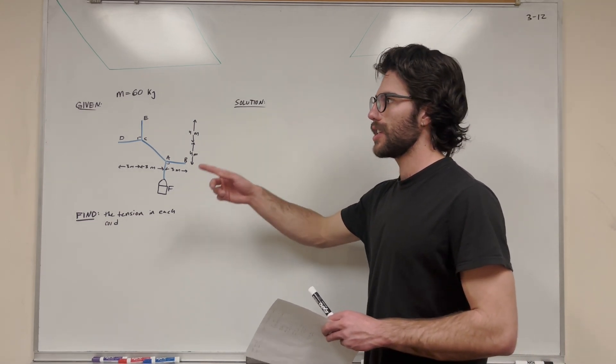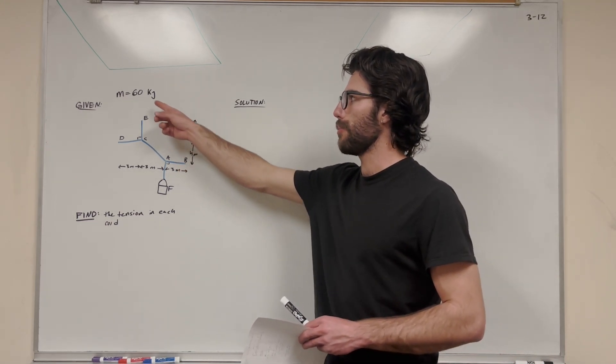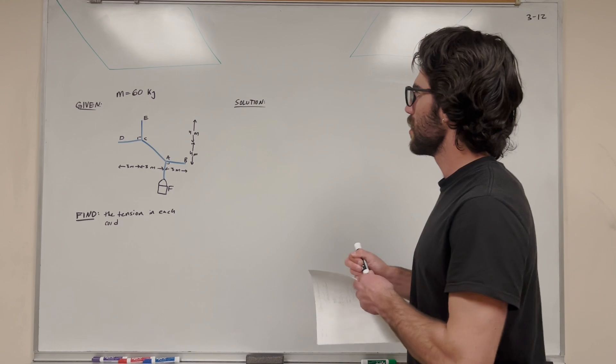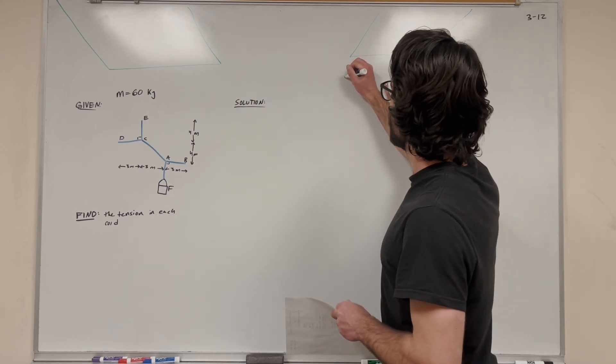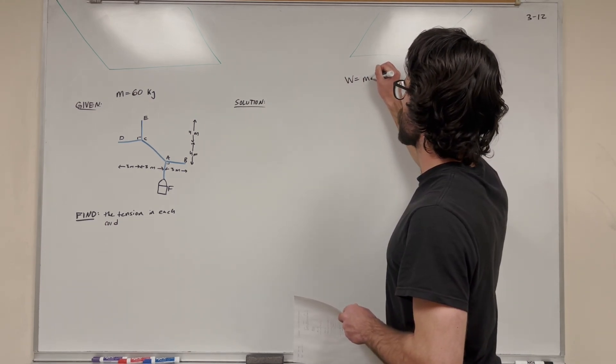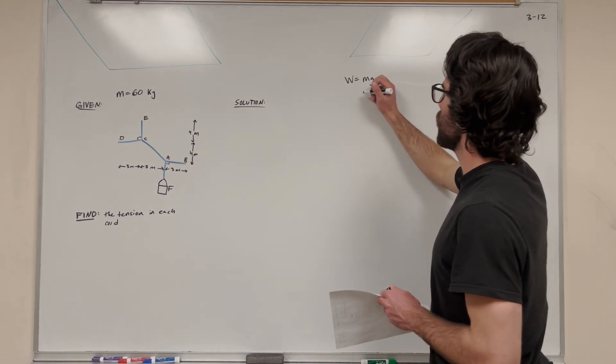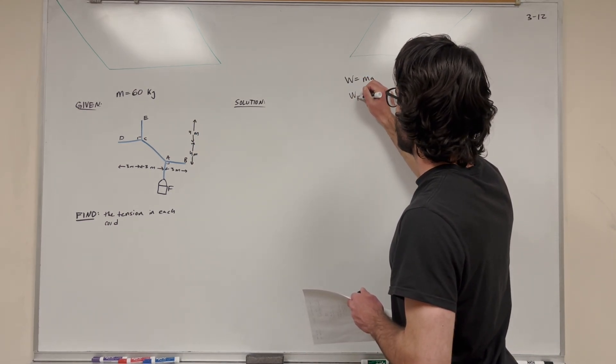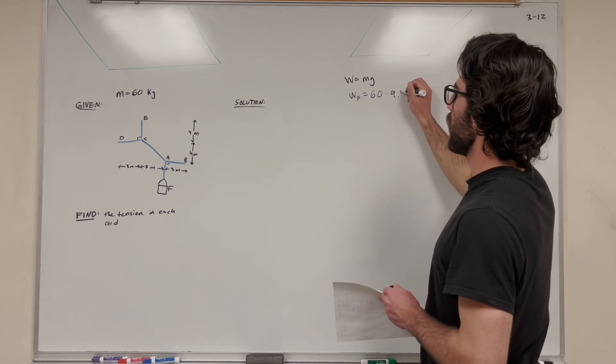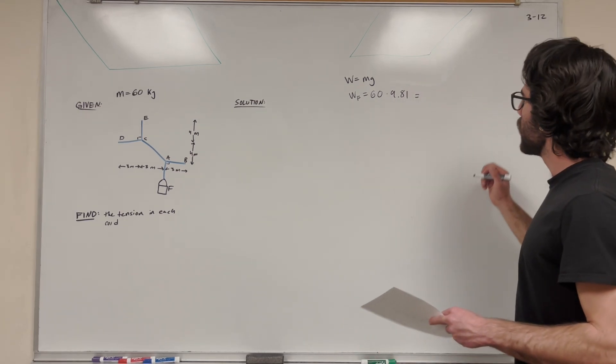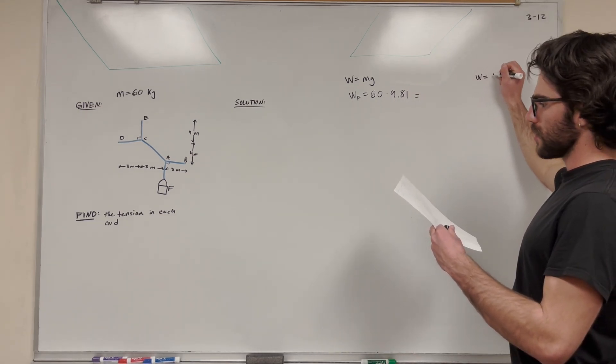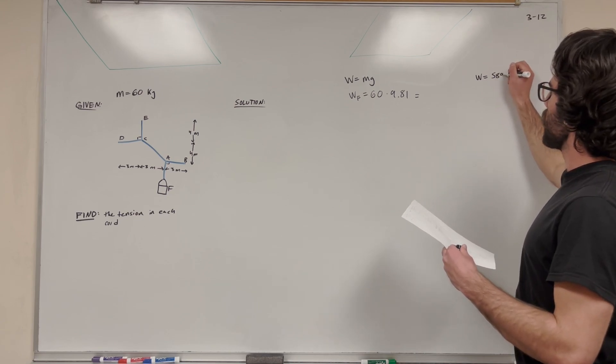But first of all, let's figure out what the mass of this is. We're given mass. We need to find the weight. So remember, weight is equal to mass times gravity. We're in kilograms, so we're going to use the SI gravitational constant. So we're going to say the weight of F is equal to 60 kilograms times 9.8. And that's going to give us that the weight is equal to 589 newtons.